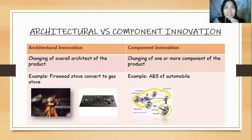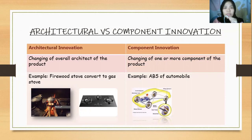Architectural versus component innovation: architectural innovation is the changing of the overall architecture of the product. For example, a firewood stove converted to a gas stove. Component innovation is the changing of one or more components of the product. For example, ABS of an automobile.